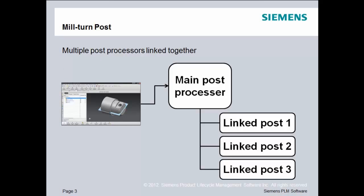The typical process that we use to build a mill-turned post processor is to link multiple post processors together. We'll have one main post processor that the NC programmer chooses when he selects post process from NX or CAM Express. That main post processor is then linked to one or more other post processors to perform specific functions.